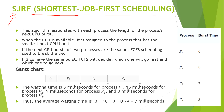In the shortest job first scheduling algorithm, the job which has the lowest time taken to execute the process will be allocated first. Let's say there are four processes and their burst times are given in the question. The algorithm will firstly allocate the resource which is taking the lowest burst time.